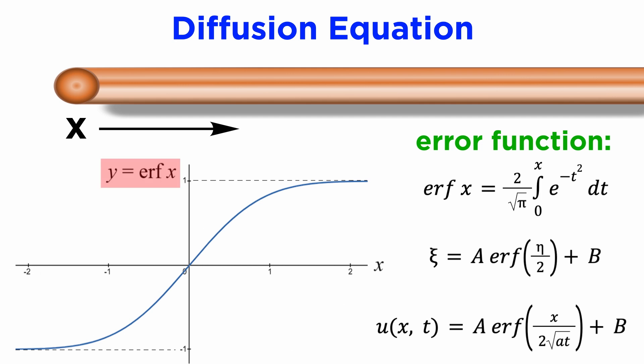Using numerical integration, we can make a plot of the error function to get a feel for what it looks like, and it resembles a smooth sigmoid curve, which starts at the origin and then approaches plus or minus one as horizontal asymptotes.